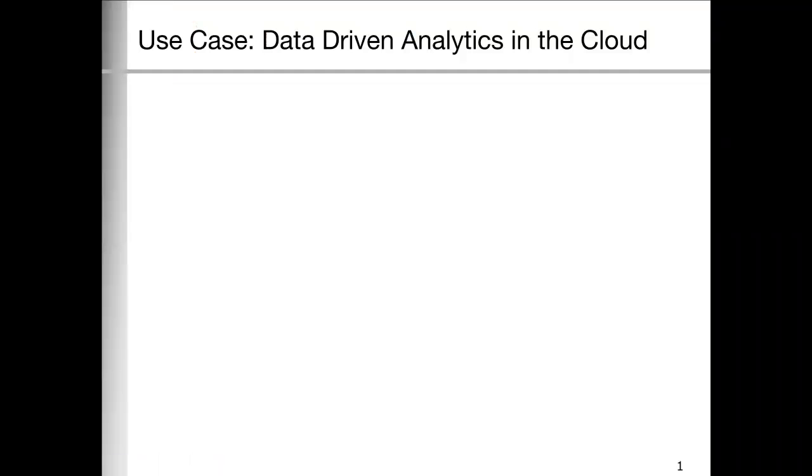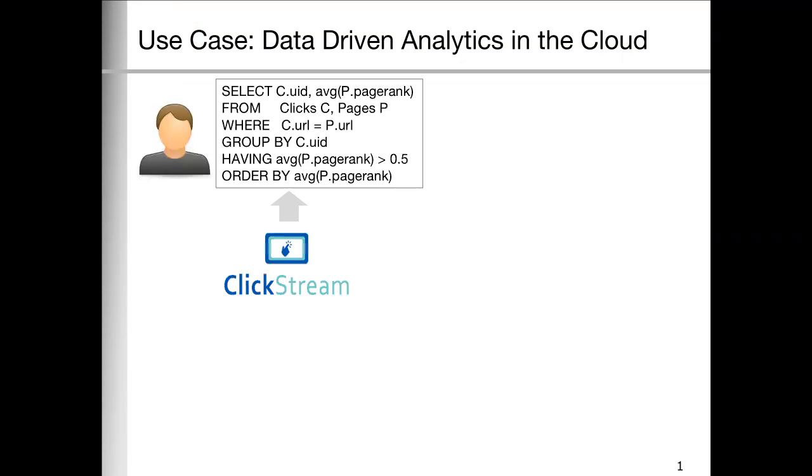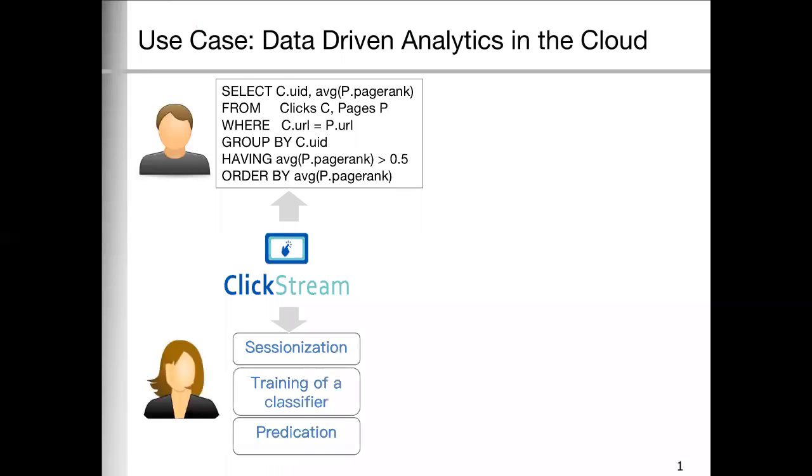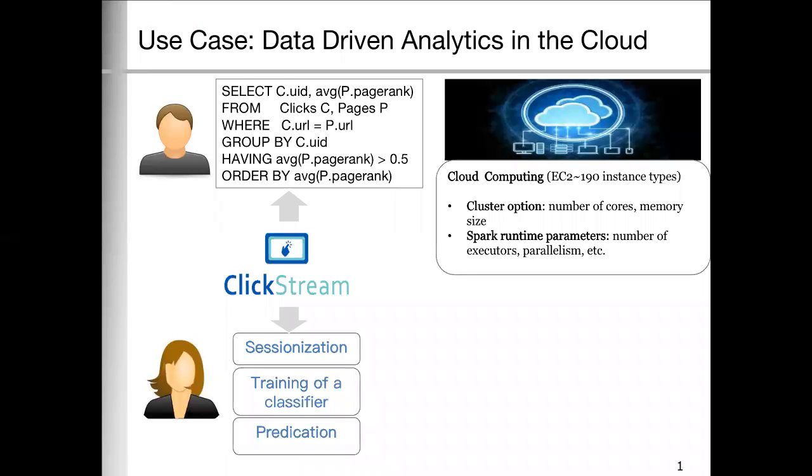First, let's look at a use case. There is a user who wants to run a SQL task, and there is another one who wants to run a machine learning task. They both submit their task to a cloud environment, such as Amazon EC2. There are a lot of instance types, differs in cluster options, such as number of cores, memory size. Also, there are Spark runtime parameters to be set, like the number of executors, parallelism, etc.